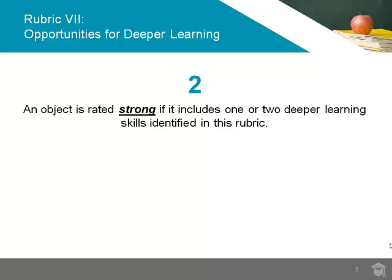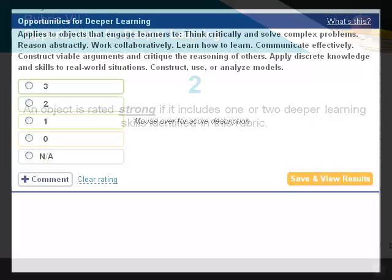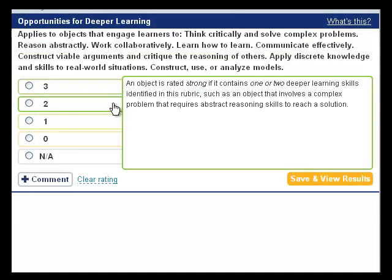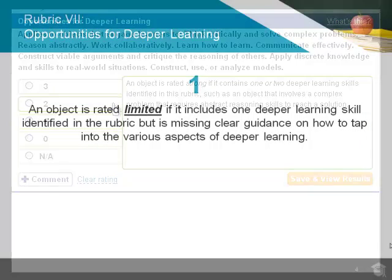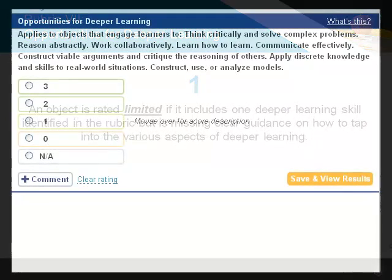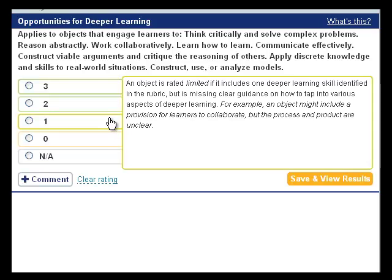If an object includes just one or two deeper learning skills, it should be rated strong and given a 2 rating. An object is limited and deserves a 1 rating for this rubric if it includes one deeper learning skill, but it is missing clear guidance on how to tap into aspects of deeper learning.